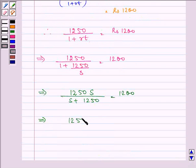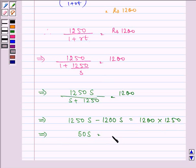Further, 1250S minus 1200S is equal to 1200 into 1250. This further implies S is 150000 upon 50.